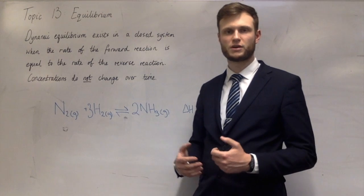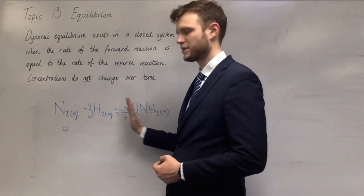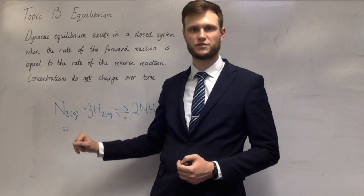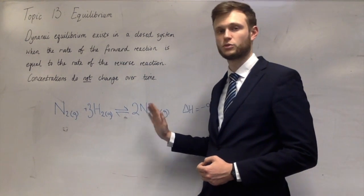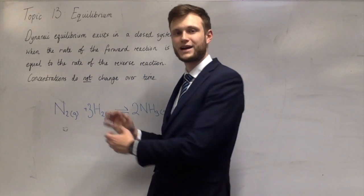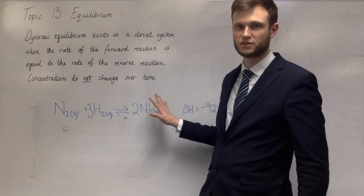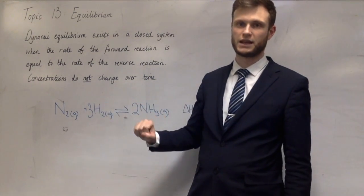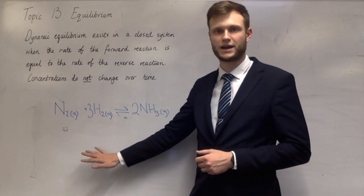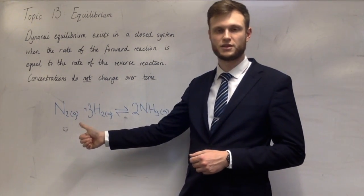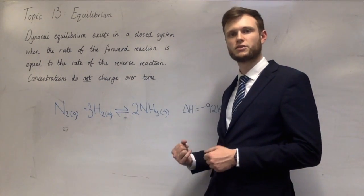When talking about positions of equilibrium shifting: if it's making more products we call that shifting to the right, and if it's making more reactants we call that shifting to the left. So adding reactants shifts it to the right; adding products shifts it to the left. And if you remove reactants, that shifts it to the left; and if you remove products, that shifts it to the right.